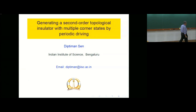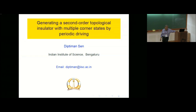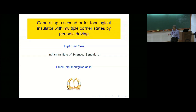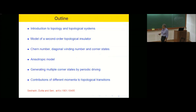OK, so first of all, I'd like to thank the organizers for inviting me to give this talk. I've not worked recently in the area of Quantum Hall, and it stays there. So I thought I'd give this talk, which we have done recently, and thought it may be interesting for you. This talk is about what is called a higher-order topological insulator, and what they are and how we can produce multiple corner states by driving some parameter in the Hamiltonian of such systems periodically in time.